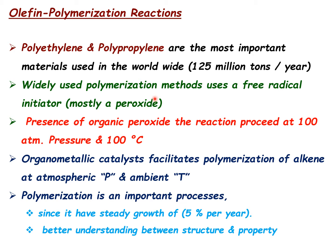In the initial stage, olefin polymerization was carried out using free radical initiators, mostly peroxo or peroxide species — in particular organic peroxides — which required relatively high pressure and high temperatures. Later, the development of organometallic catalysts facilitated the polymerization of olefins at atmospheric conditions — that is, atmospheric pressure and ambient temperature — which broadened the scope of the olefin polymerization process.